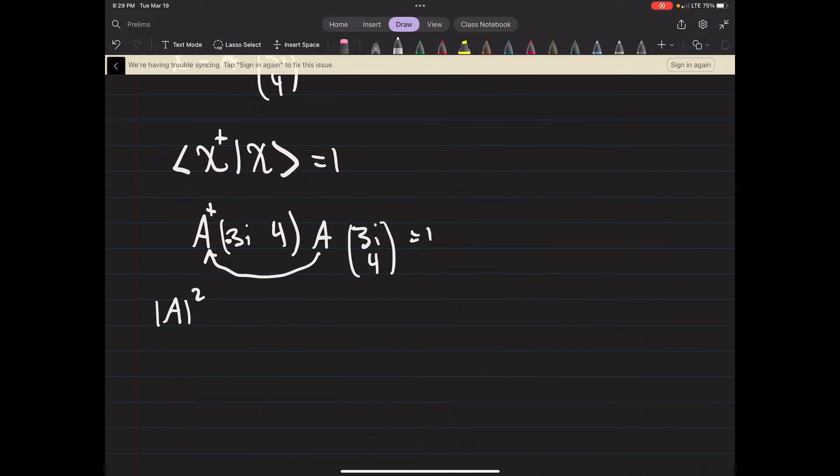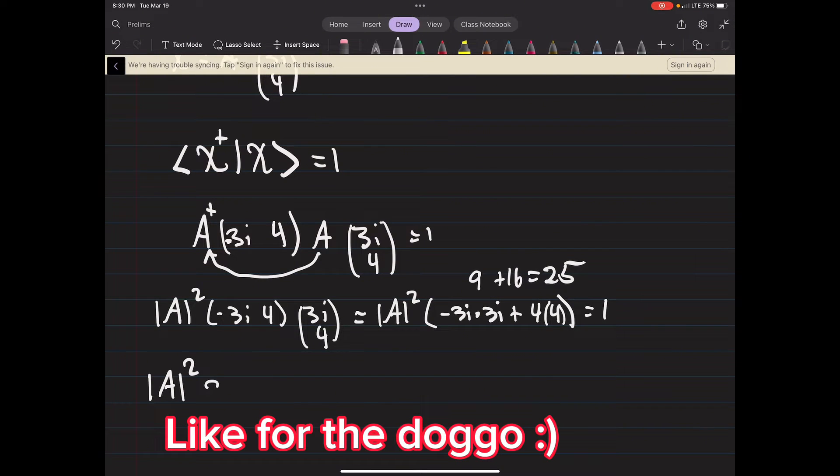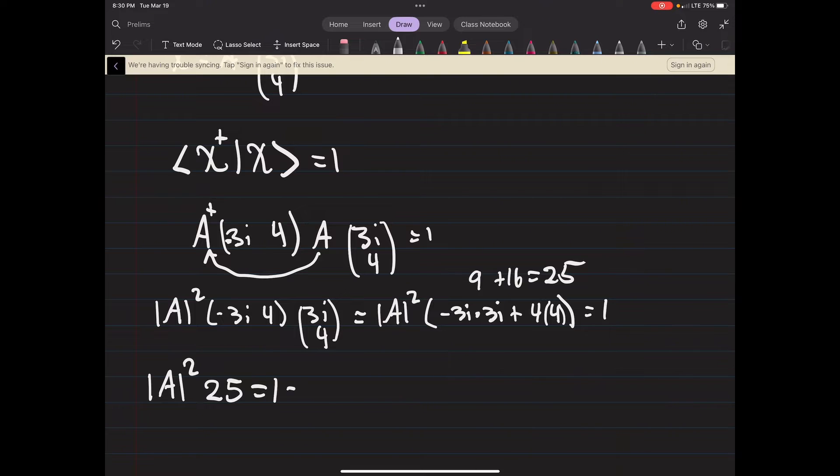So that turns into our magnitude squared and then we have our matrix (-3i, 4) times (3i, 4). That is pretty straightforward - that'll be -3i times 3i plus 4 times 4. That needs to be equal to 1. So this is 9 plus 16 which is 25. So we have our constant squared times 25 equals 1, or solving for A, A equals 1 over 5. So that's pretty straightforward.